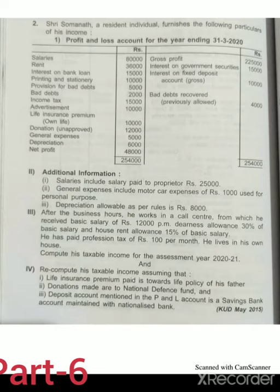Additional information: salaries include salary paid to proprietor of rupees 25,000. General expenses include motor car expenses of rupees 1,000 used for personal purpose.